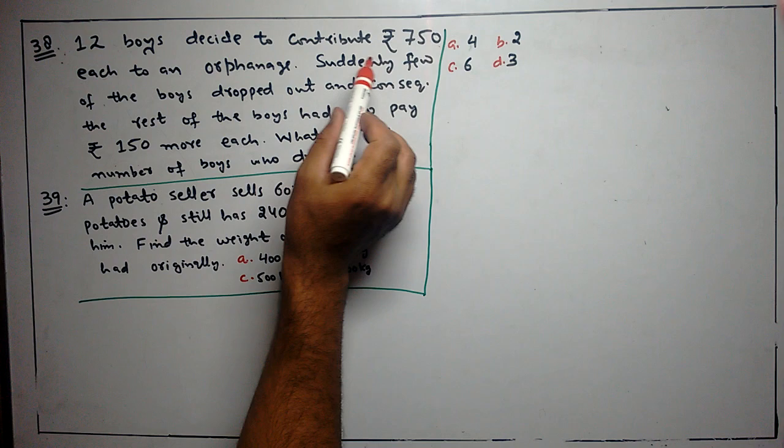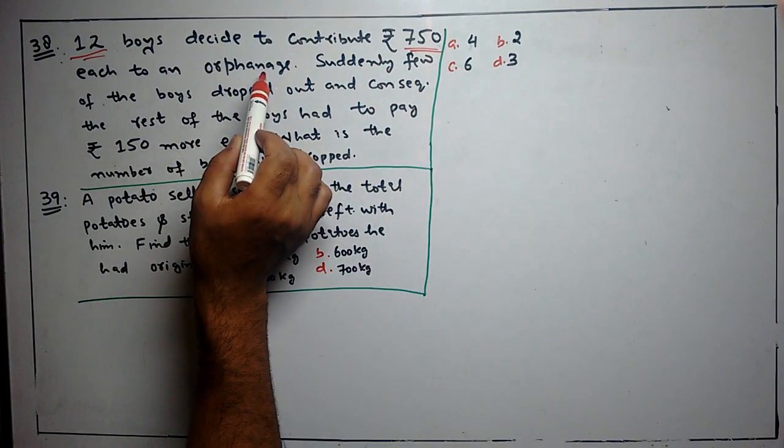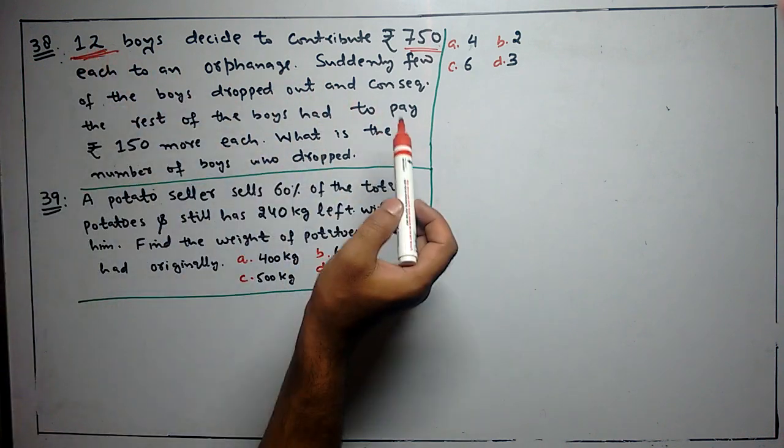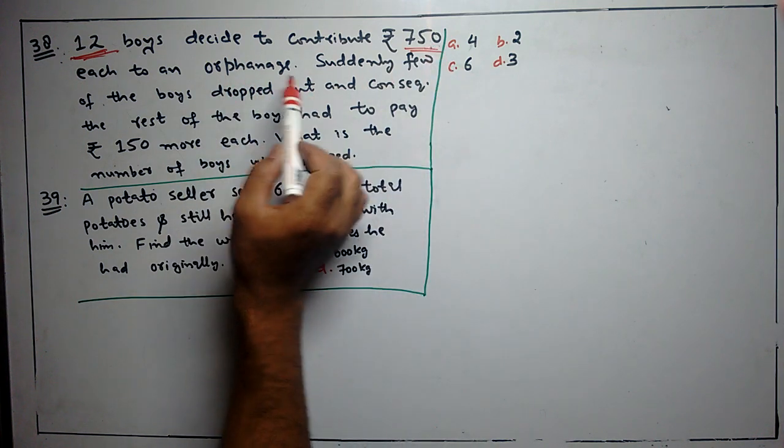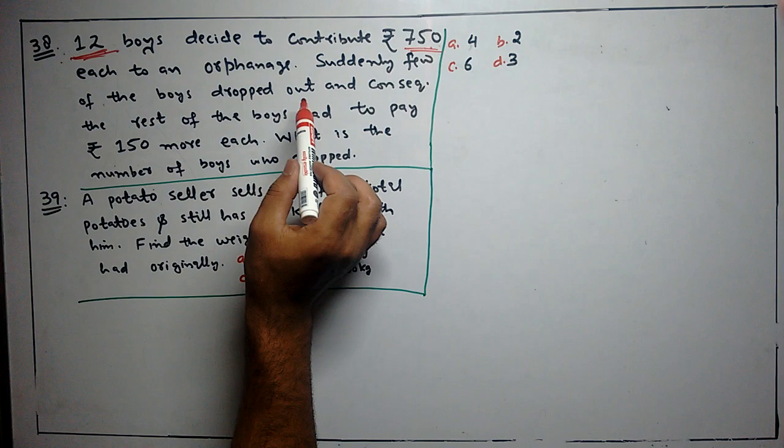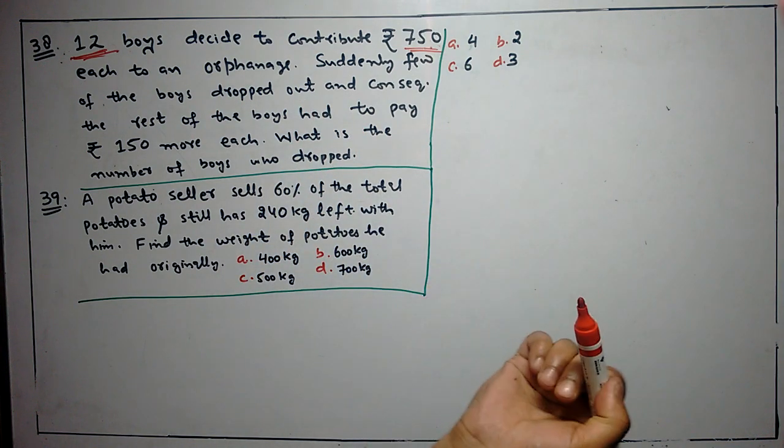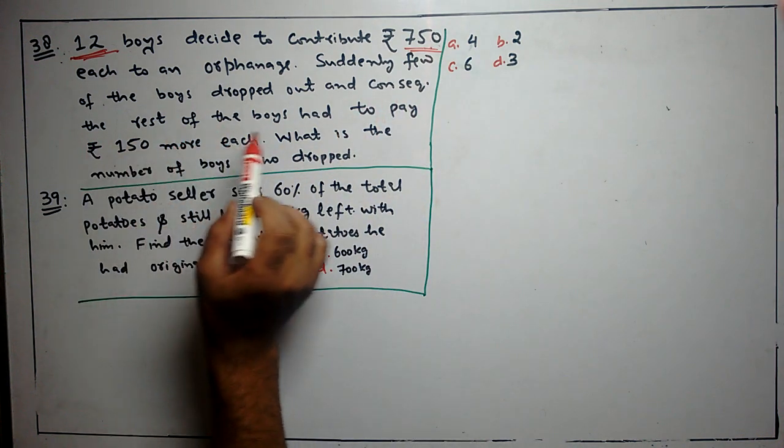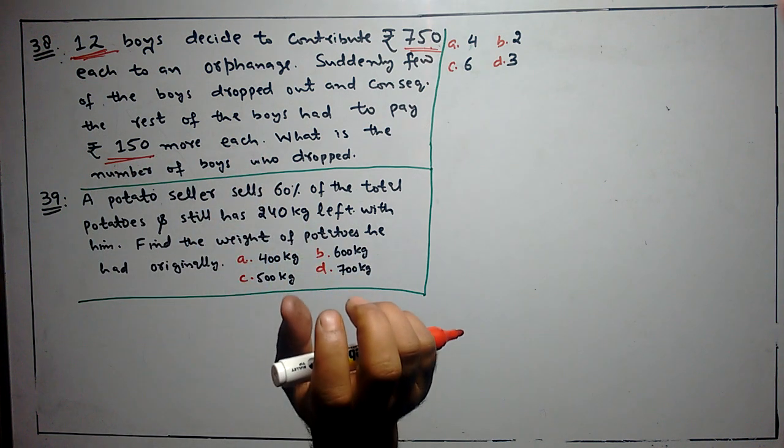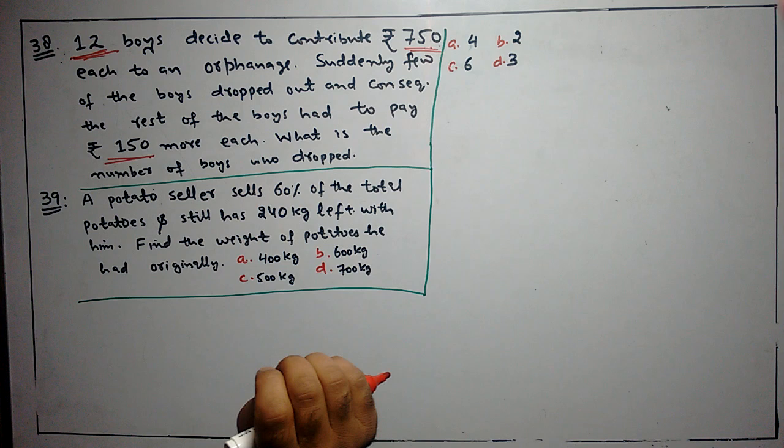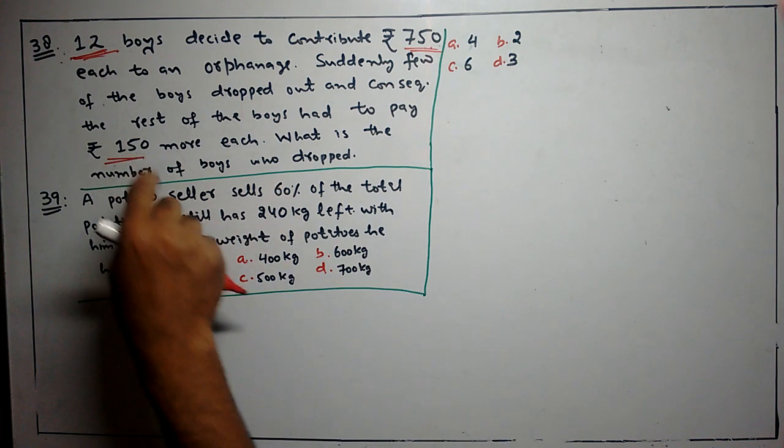12 boys decide to contribute 750 rupees each to an orphanage. Suddenly, few of the boys dropped out. What happened? Some boys left and did not give contributions. Consequently, the rest of the boys had to pay rupees 150 more each.